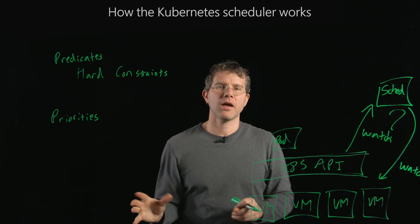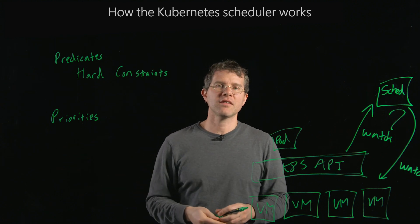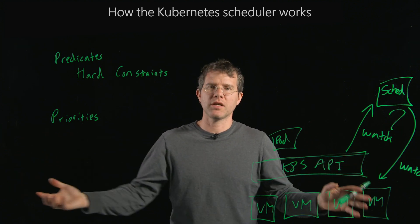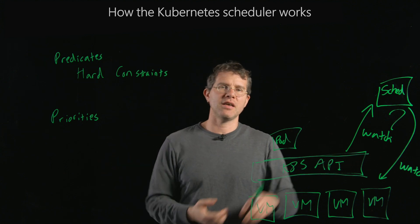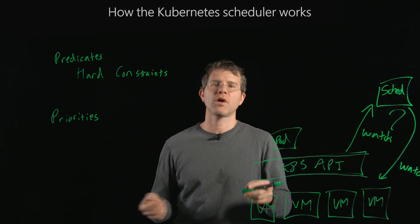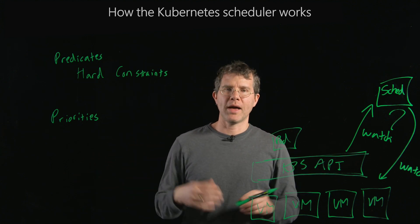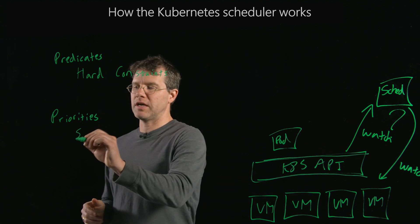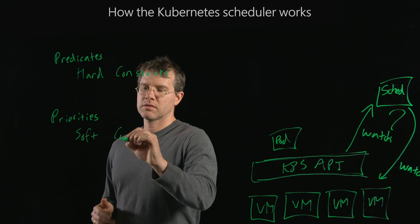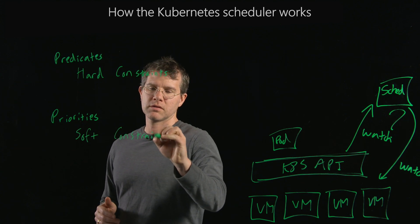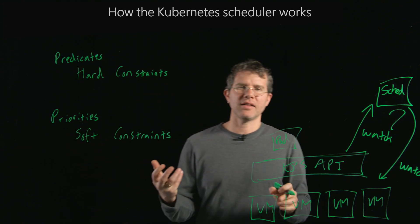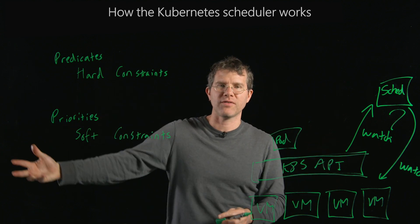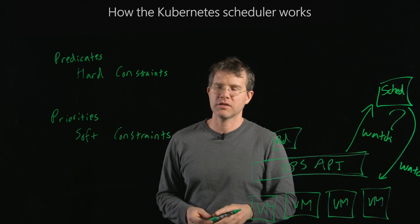Priorities, on the other hand, are softer. They say things like: it would be nice if my application was spread across a large number of failure domains, or it would be nice if every machine in the cluster roughly had the same amount of workload assigned to it. Priorities are soft constraints that can be violated, but give you some sense of the badness or goodness of either satisfying or not satisfying the constraint.